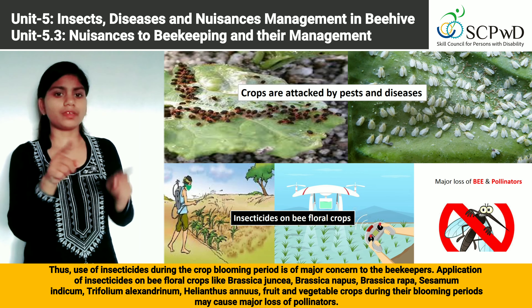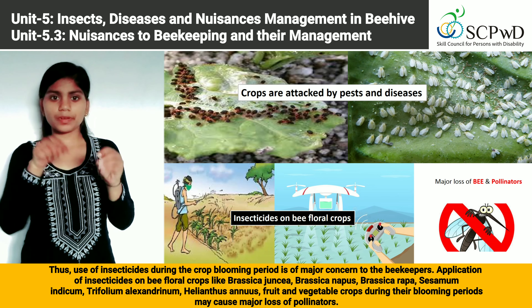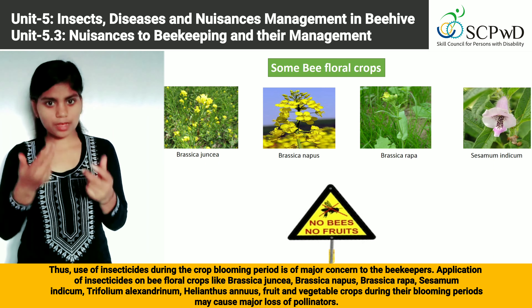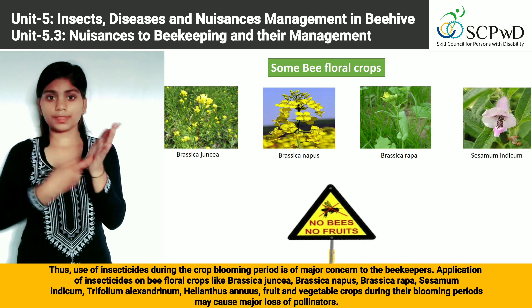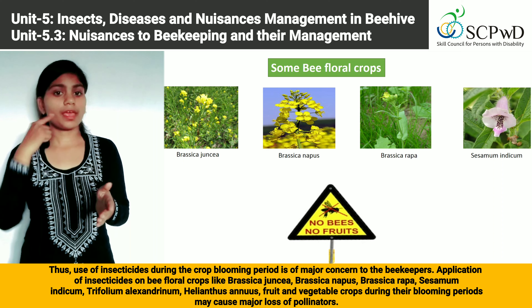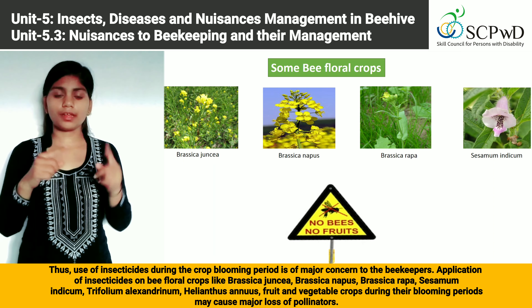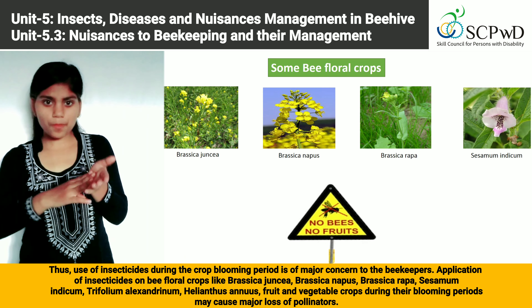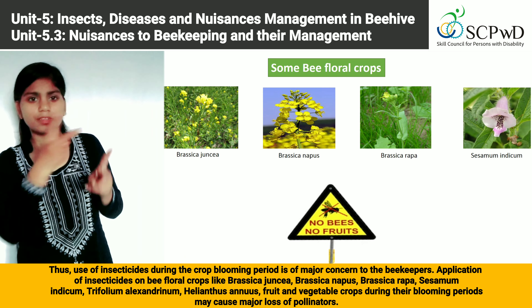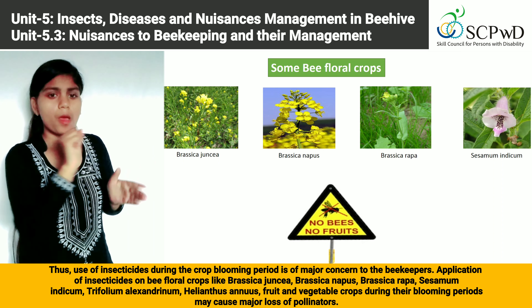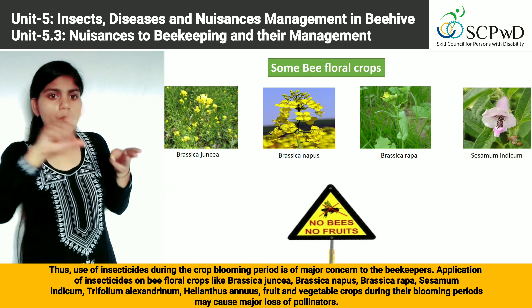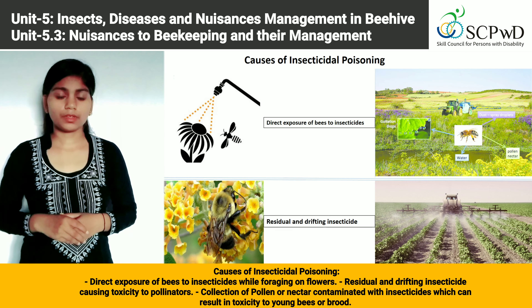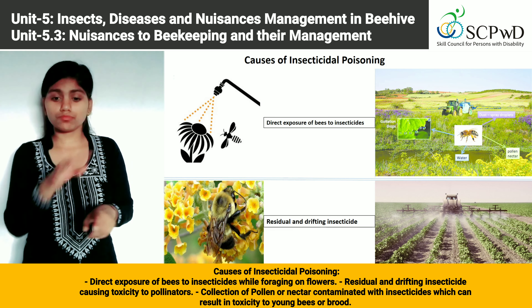Application of insecticides on bee floral crops like Brassica juncea, Brassica napus, Brassica rapa, Sesamum indicum, Trifolium alexandrinum, Helianthus annuus, and fruit and vegetable crops during their blooming periods may be a major cause of harm to pollinators.